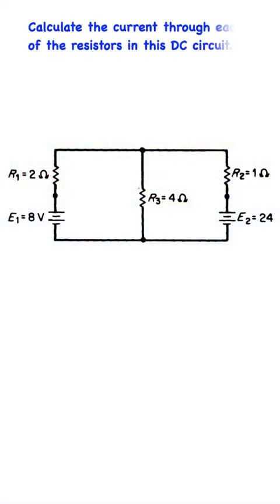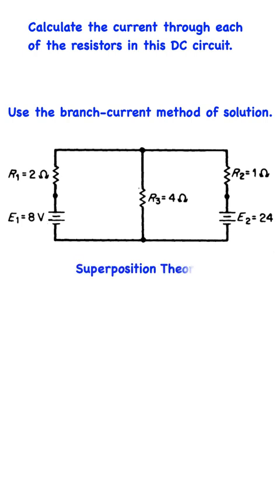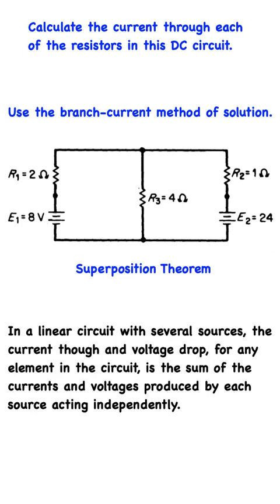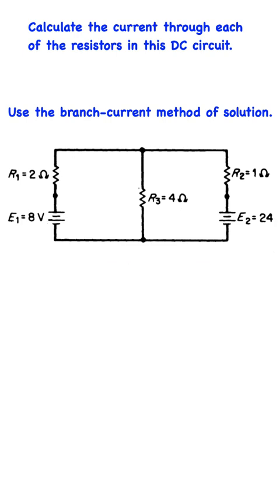In this problem, we are to calculate the current through each of the resistors in this DC circuit. This time, we will use the branch current method of solution. The branch current method makes use of the superposition theorem, which states in a linear circuit with several sources, the current and voltage drop for any element in the circuit is the sum of the currents and voltages produced by each source acting independently.